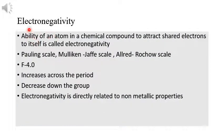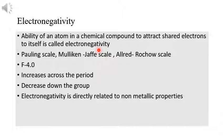Electronegativity and electron gain enthalpy are related but different terms — both involve gaining electrons. Electronegativity is the ability of an atom in a chemical compound to attract shared electrons to itself, whereas electron gain enthalpy is the ability to accept an electron. Electronegativity can be measured using different scales: the Pauling scale, the Mulliken-Jaffe scale, and the Alfred Rochow scale. On the Pauling scale, fluorine has a value of 4, which is the highest. Electronegativity increases across a period and decreases down a group.